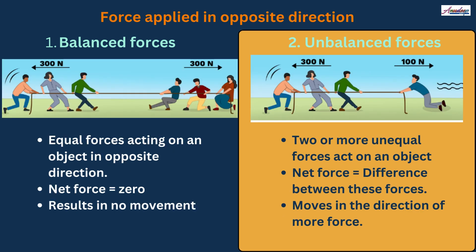Let's understand this force applied in opposite direction with one more example. You must be aware about the game tug of war, in which the rope is pulled from both sides. In case of balanced forces, equal force of 300 Newton is applied from both sides, because of which the net force will be zero and it will result in no movement. But if we see the unbalanced forces, then a different amount of force is applied from both the direction, that is in one direction it is 300 Newton and in other direction it is 100 Newton. So the net resultant force will be equal to 200 Newton and it will move in the direction where more force is applied.